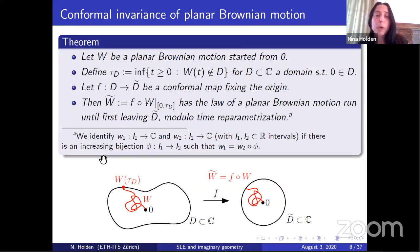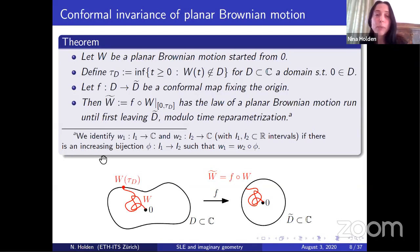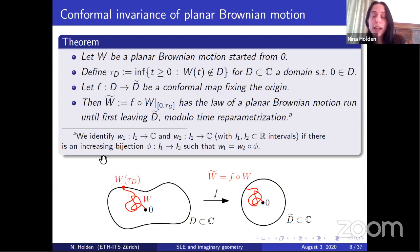Schramm-Löwner evolutions are what we call conformally invariant, and I will explain later what that is. But first I will explain what it means in the setting of planar Brownian motion. We let W be a planar Brownian motion started from the origin, and we assume that D is some domain in the complex plane containing the origin. We let τ_D be the time that this Brownian motion is first exiting D. Then we let F be some conformal map from D to some other domain D̃, fixing the origin. We let W̃ be the image of W under this map, where we run W only until time τ_D. Conformal invariance means that W̃ has the law of a planar Brownian motion until it first leaves D̃.